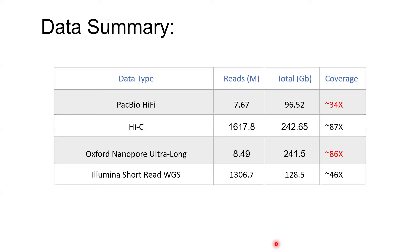Comment from the audience: There seems to be a consensus that if you have to go in excess on anything, it's the ONT ultra-long reads — with Hi-Fi for about where you need to be. We're not working in Verkko per se, but 86x total with 32x over 100 KB is what was used here.